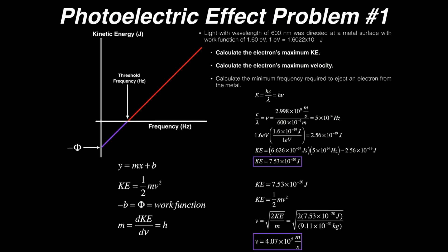So that is one example of a photoelectric effect problem. Generally, you'll be asked to calculate the maximum kinetic energy, the maximum velocity, the work function, and the threshold frequency — the minimum frequency required to eject an electron from the metal. Hopefully that makes sense.